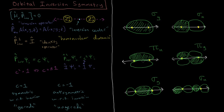So these are the types of labels we use to define different molecular orbitals. We define them both by their angular momentum character — sigma, pi, delta, etc. — and by their symmetry with respect to inversion, either gerade (g) or ungerade (u).